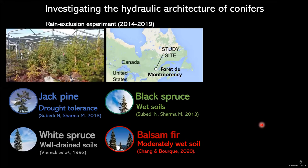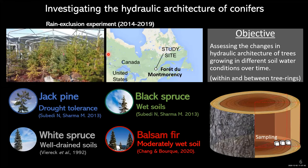With this in mind, we began investigating the hydraulic architecture of four conifer species: Jack Pine, White Spruce, Black Spruce, and Balsam Fir, with Jack Pine expected to be the most drought-tolerant. These species were tested in a rain exclusion experiment started in 2014 at Forêt de Montmorency in Quebec, providing a gradient of soil moisture. Our objective was to assess changes in hydraulic architecture under different soil water conditions and over time, with measurements made within and between tree rings from early wood to capture variation along the growing season.